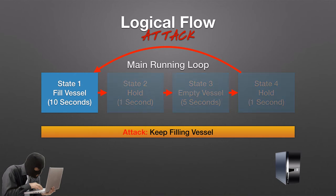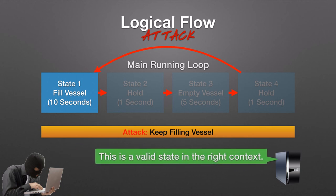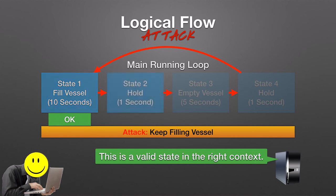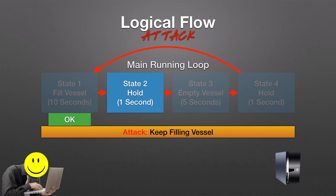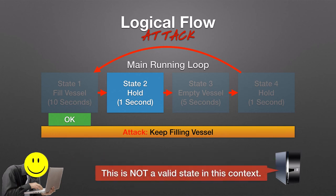In state 1, the attacker's traffic matches the current state of the system. Because this has no effect on the actual state of the system, Chainsaw allows it, and the evil attacker believes his plan is working. However, as soon as the transition to state 2 is made by the legitimate controller, Chainsaw will flag the attacker's traffic as being invalid.